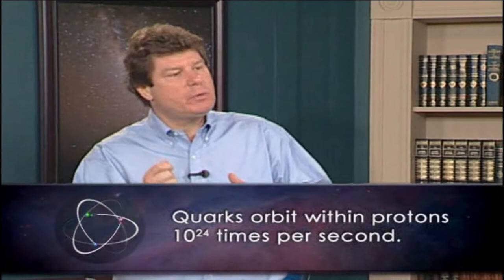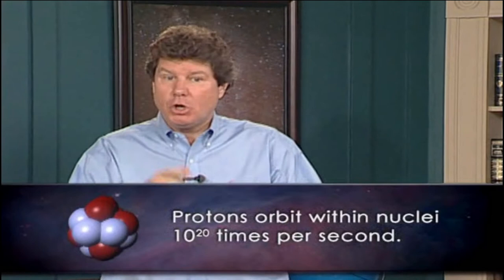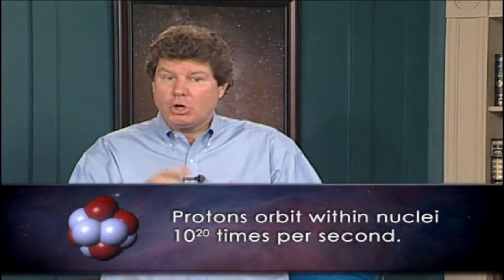Something we really can't perceive is the incredible dynamism of the atomic world — everything is moving around at blurred speed. Quarks orbit within protons 10 to the 24 times per second. Protons orbit within nuclei 10 to the 20 times per second. Electrons orbit within atoms 10 to the 15 times per second. If an electron's orbit took one second, then for me to say 'hello' would take 30 million years. Atoms themselves are also in constant motion — even in solids, they jostle back and forth like tiny pinballs caught in a pinball machine.